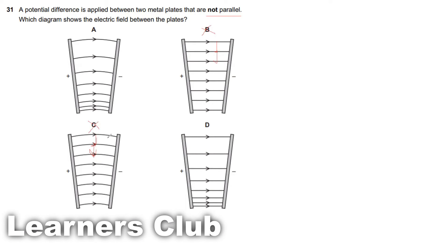We have the greatest electric field strength where the plates are placed closer. So the answer should be A or D. If the plates are not parallel, the field lines will not be straight — they'll be curved. Therefore, the answer is A.